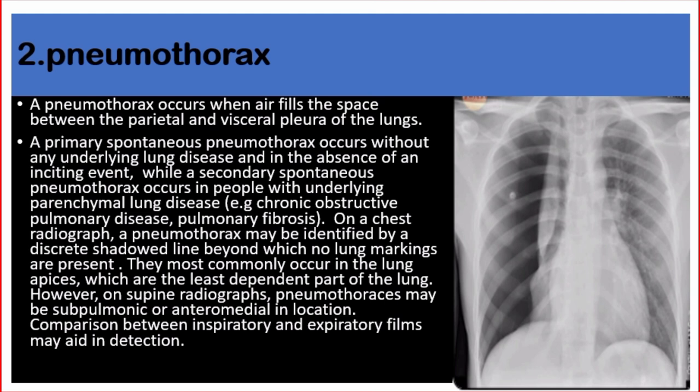On a chest radiograph, a pneumothorax may be identified by a discrete shadowed line beyond which no lung markings are present. They most commonly occur in the lung apices, which are the least dependent part of the lung. However, on supine radiographs, pneumothorax may be subpulmonic or anteromedial in location. Comparison between inspiratory and expiratory films may aid in detection.